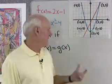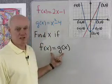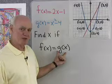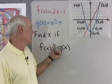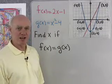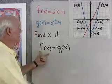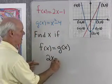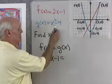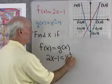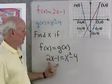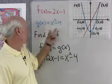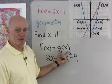This time we want to find x if f of x is equal to g of x. So if these two functions are equal to each other — these two values of y are equal to each other — what value of x does that happen for? f of x is equal to 2x minus 1, so I have 2x minus 1 is equal to x squared minus 4. Just substitute this expression for f of x and this expression for g of x.